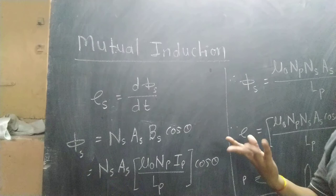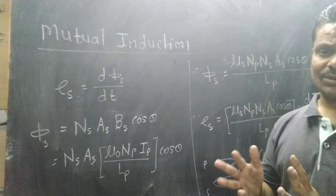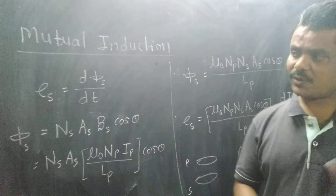The primary coil is the one across which the input voltage is applied, and the secondary coil is the one across which the output is taken. This is governed by the law of Electromagnetic Induction.